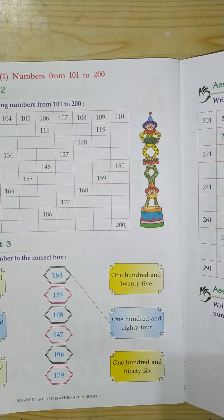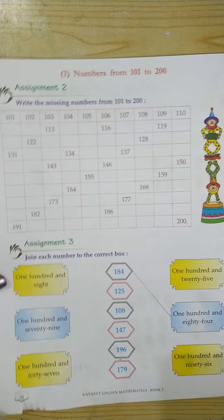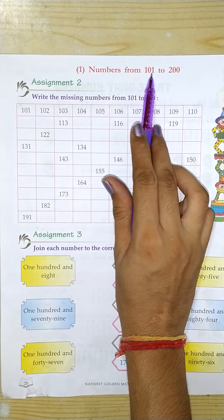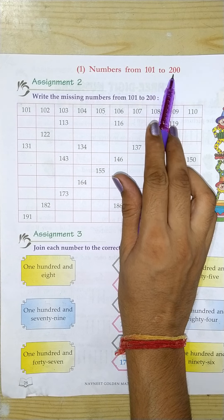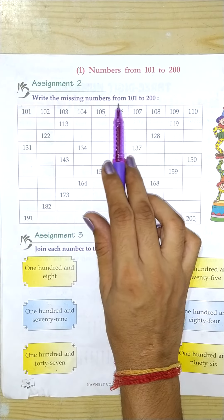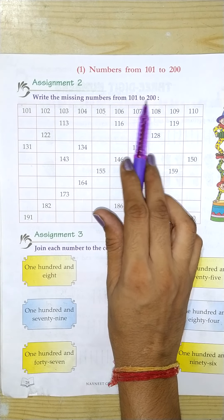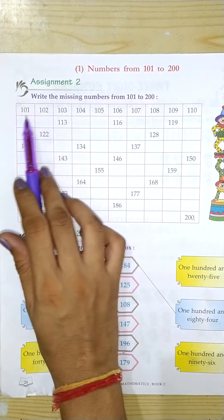Now we will do assignment 2. What are numbers from 101 to 200? Assignment 2, write the missing numbers from 101 to 200.